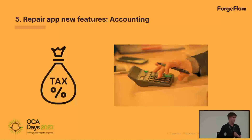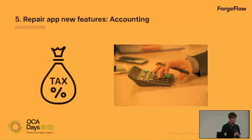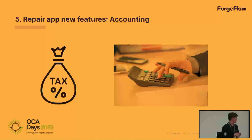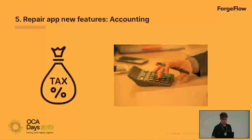Another issue companies faced, especially with US customers, was that taxes are computed depending on the address and state. Companies could not inform customers of the real cost of repairs unless they created an invoice. To avoid that, we introduced a model that computes taxes in the repair app, allowing companies to inform customers of the real cost of repairs without having to create an invoice.